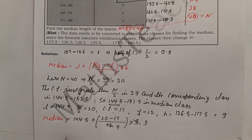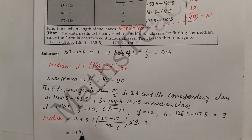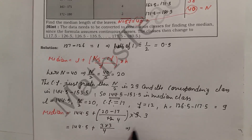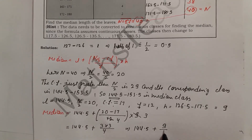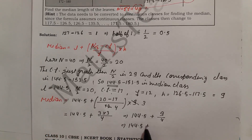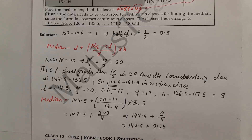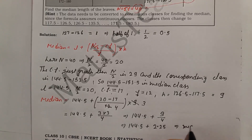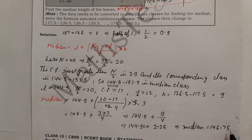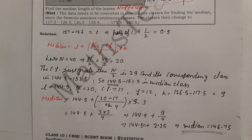Simplifying: 20 − 17 = 3, and 9 cancels with 12 to give 3/4. So Median = 144.5 + (3 × 3) / 4 = 144.5 + 9/4 = 144.5 + 2.25 = 146.75.